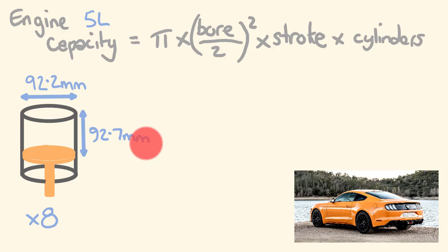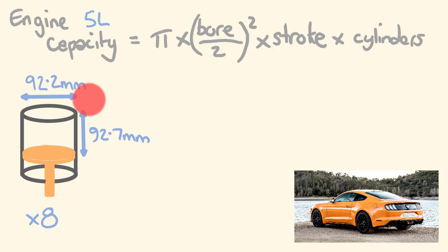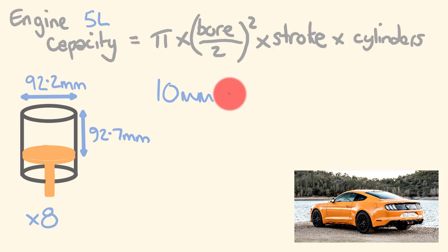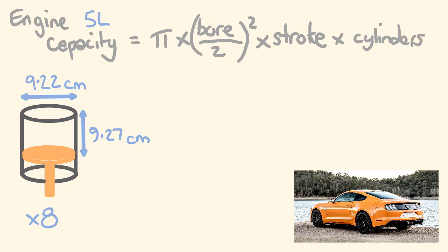Before I start, I'm going to convert these measurements across, because we talk about engine capacity in litres or cubic centimetres. I'll start with cubic centimetres, and then change across to litres. For cubic centimetres, we need measurements in centimetres. There are 10 millimetres in 1 centimetre, so I'll divide each measurement by 10. Through the magic of computers, I've changed these across to centimetres.